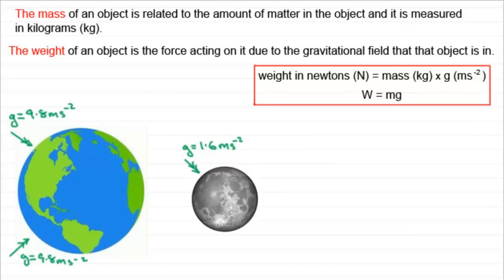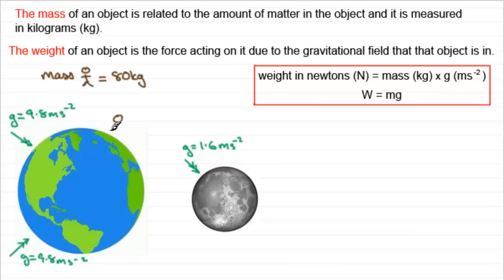So what does this mean? Well, if we took a person whose mass was, let's say, 80 kilograms. Now whether they were out in space, on the surface of the earth, or on the moon, their mass would still be the same — it would be 80 kilograms. But it's their weight that would change.